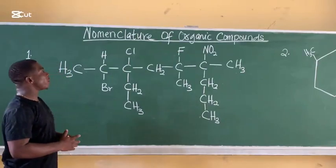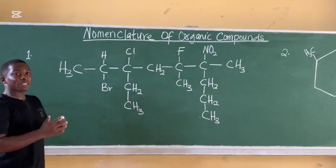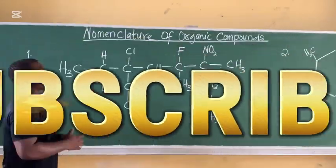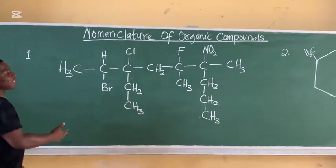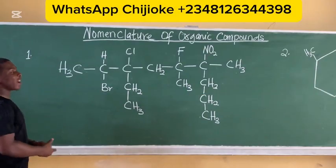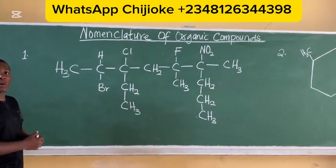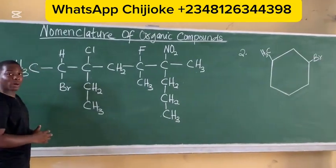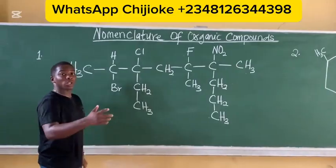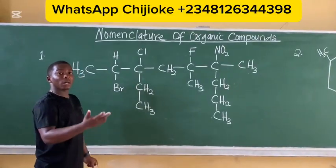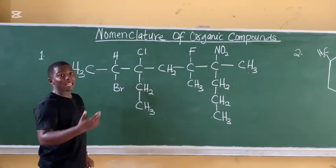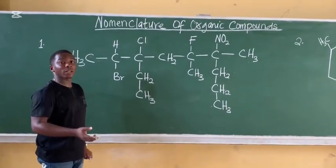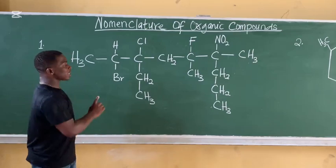Okay, so nomenclature of organic compounds, a very vital topic in organic chemistry. Let's see how we can name these two structures. We have an aliphatic organic compound and we have an alicyclic organic compound. Aliphatic organic compounds are straight or branched organic structures, but alicyclic compounds are closed chains — rings of organic compounds.